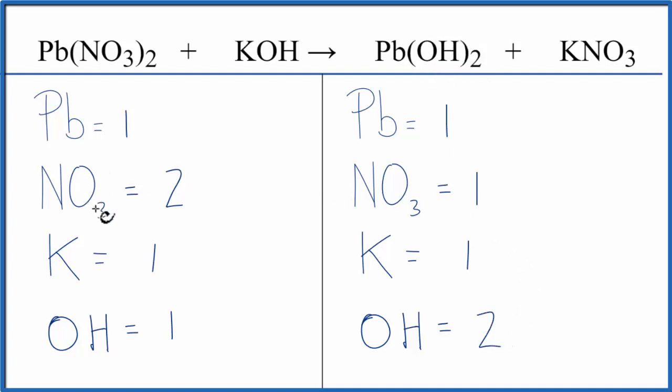It looks like we could fix the nitrates here if we put a two in front of the KNO₃. One nitrate times two, that gives us two, so the nitrates are balanced, and then one potassium times two, that gives us two of those.